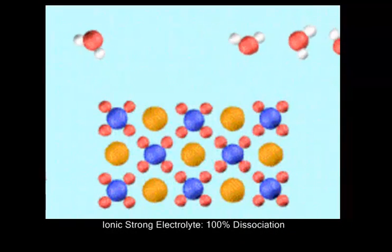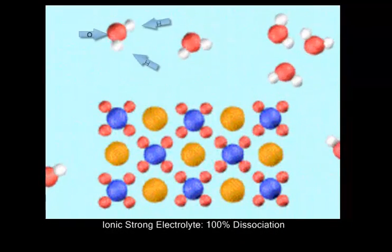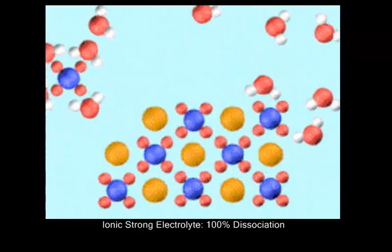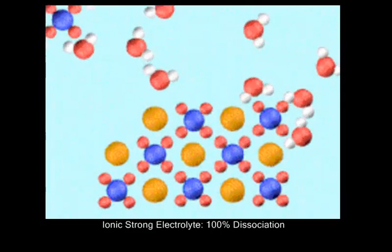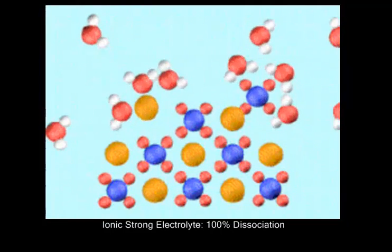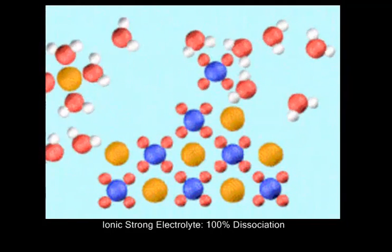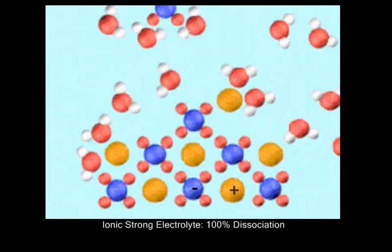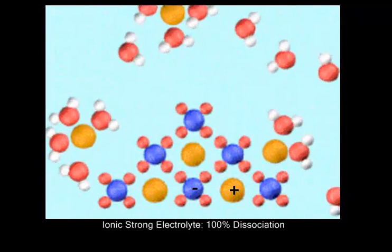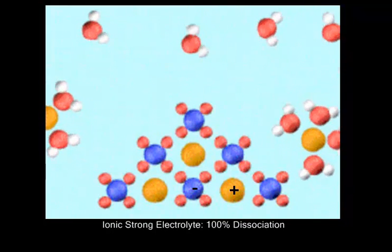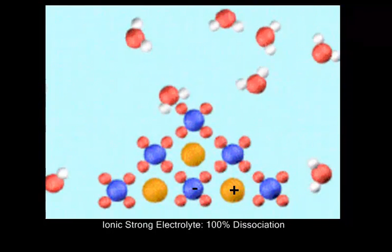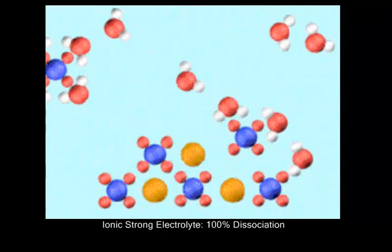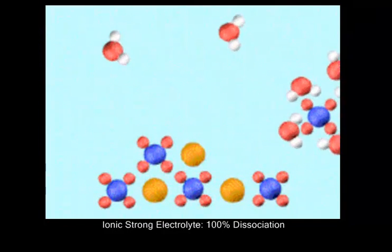Water molecules are made of hydrogen and oxygen. The hydrogen side of the molecule has a positive charge, and the oxygen side is negative. When water molecules contact an ionic compound such as potassium permanganate, their positive sides are attracted to the negative ions of the compound, and the negative sides of the H2O are attracted to the positive ions. These attractions allow the crystal lattice to break down and the compound dissolves.